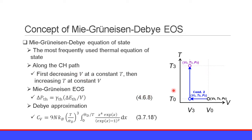First, volume is decreased from V0 to V3 at constant temperature — the standard temperature T0. Then pressure increases from P0 to P2. Then, with keeping the volume V3, the temperature is increased from T0 to T3. Then pressure is increased from P2 to P3. The path from temperature T0 to T3 — this pressure increase is expressed using the Mie-Grüneisen equation of state.